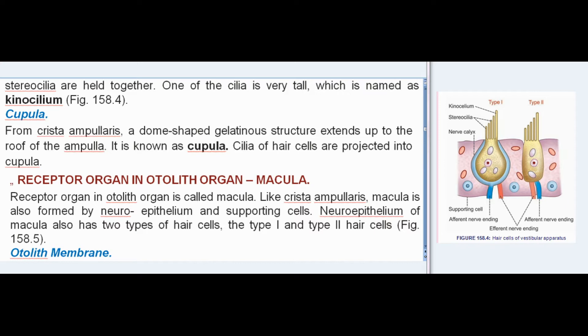A dome-shaped gelatinous structure extends up to the roof of the ampulla, known as the cupula. The cilia of the hair cells are projected into the cupula.